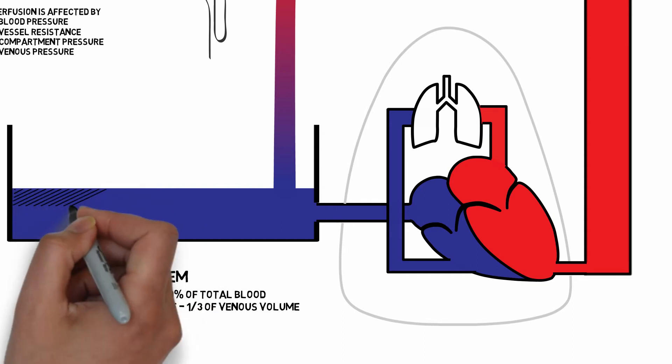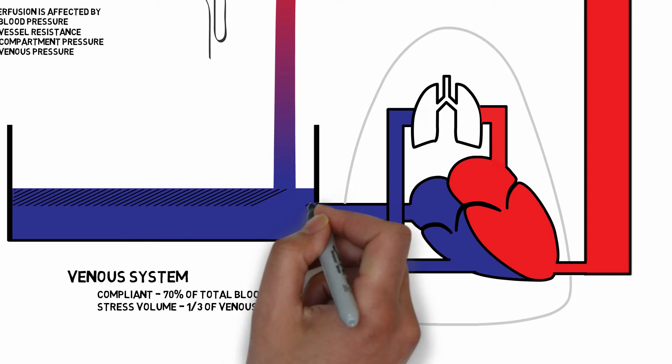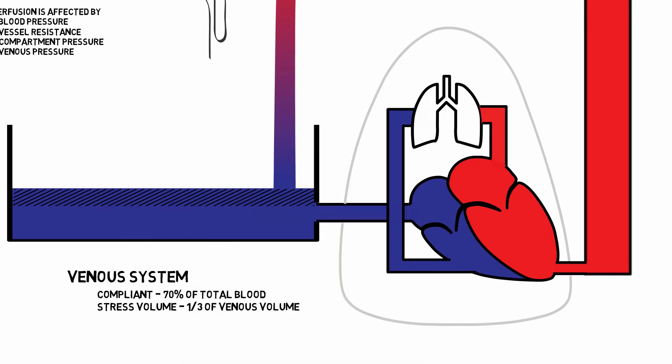This is called stress volume. The other way to think about it is: if the patient suddenly experiences cardiac arrest, this is the volume of bleeding you would expect to see if one of the great veins were transected, even in the absence of cardiac activity. Stress volume is yet another one of those things enormously important to hemodynamics, but difficult to measure. We can conceptualize it as the volume necessary to raise the pressure in the venous system above a critical venous threshold.